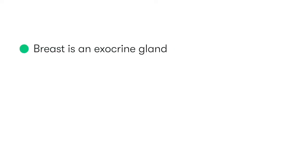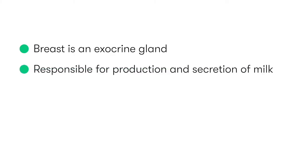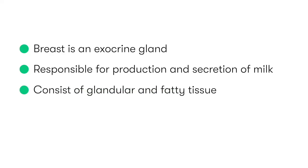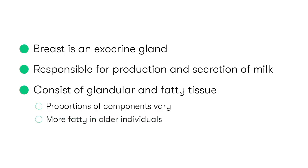The breast is an exocrine gland, which is responsible for the production and secretion of milk. It consists of both glandular and fatty tissue, and the proportions of these two components varies for different individuals and also alters with age, with a greater amount of fat in older patients.